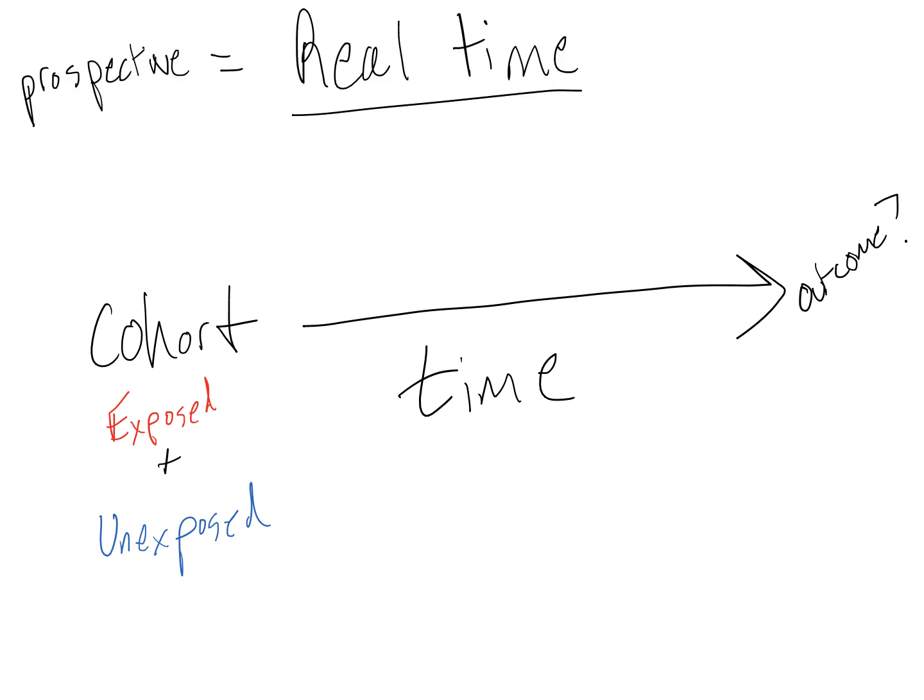In a prospective cohort, this process happens in real time. We find people who are exposed and unexposed, then follow them over time to see if they develop the outcome.